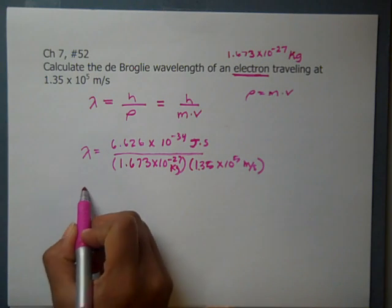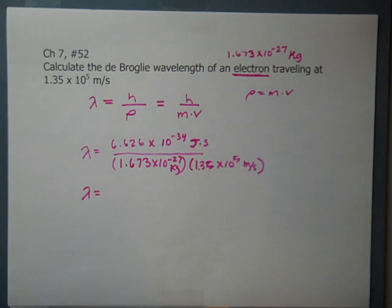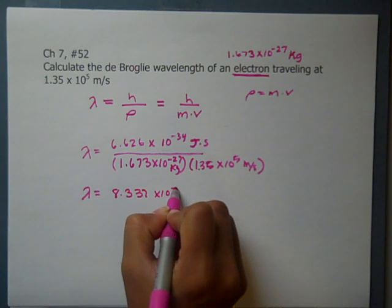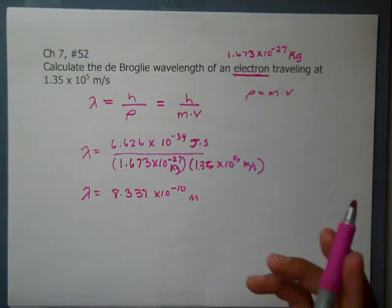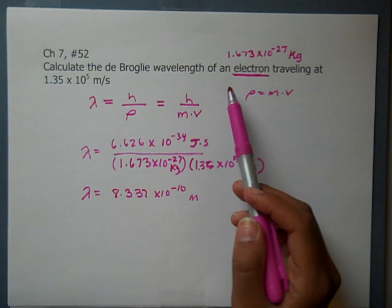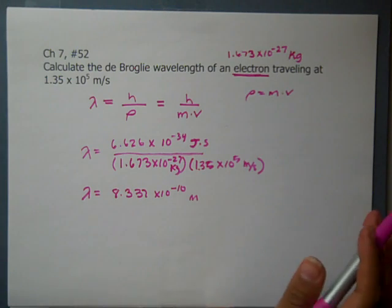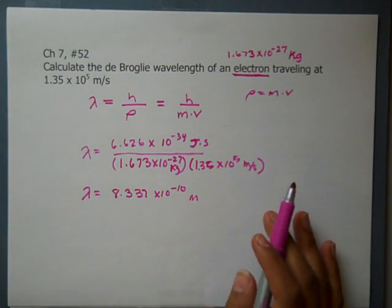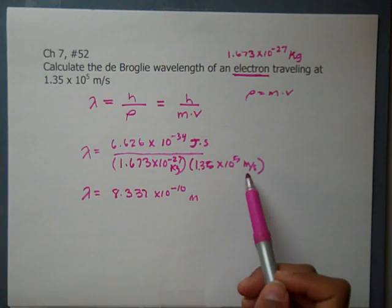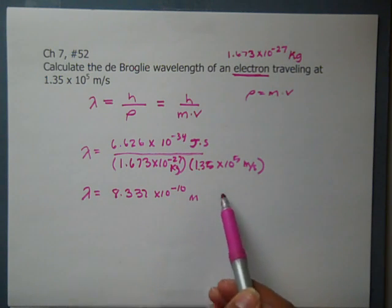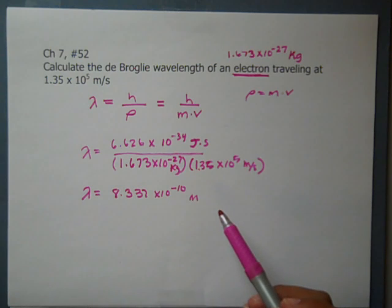We calculate all this out, and we cancel some units. And we find that our wavelength is 8.337 times 10 to the negative 10 meters. Now, I think the book actually asks for picometers, you could be asked for nanometers, it just depends. And I think it's easier to solve to meters and convert what you need to convert to. Because you have to use joules, and you have to use kilograms and meters per second for the formula to work with Planck's constant. So I would solve for meters, and then multiply out whatever you need for which units the question is asking for.